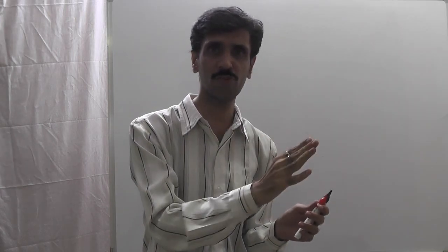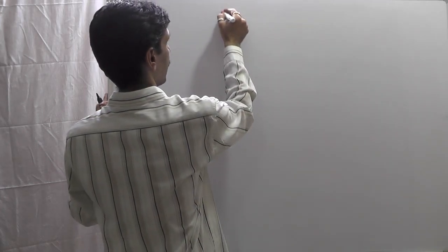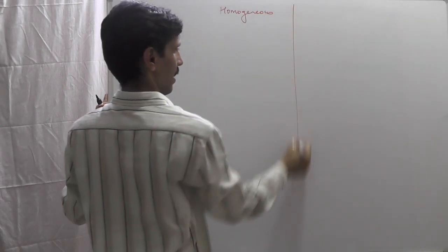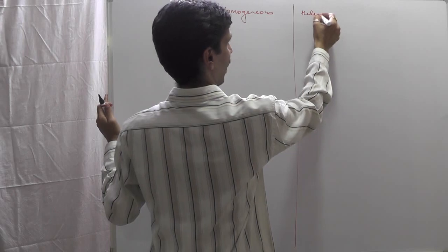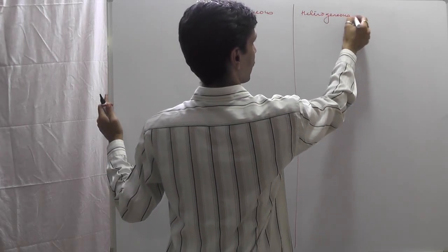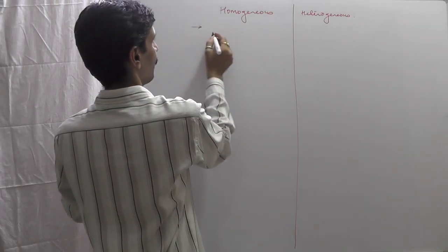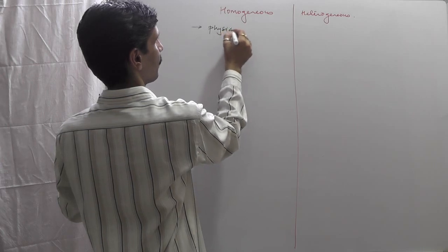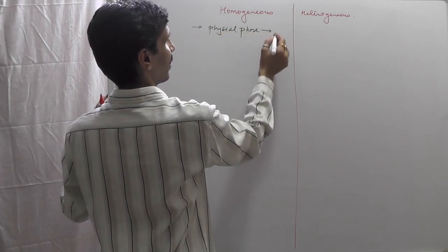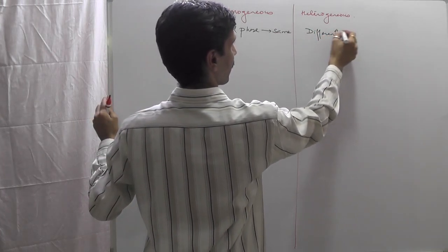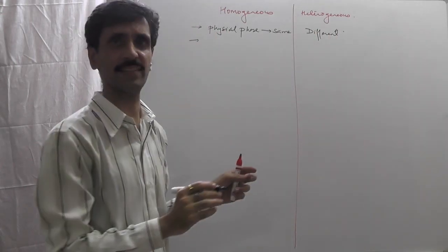Now we will discuss point by point what exactly the difference is between homogeneous and heterogeneous catalysis. The first point is the physical phase: in homogeneous catalysis, the physical phase between the reactants and the catalyst is the same, whereas in heterogeneous catalysis it is different.